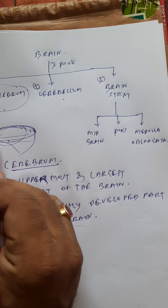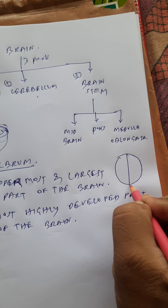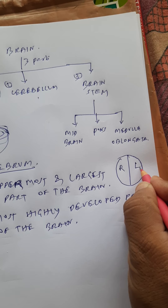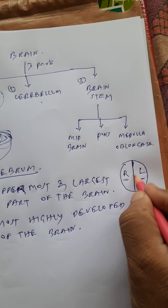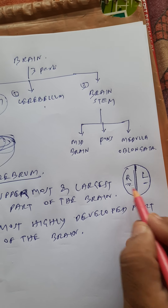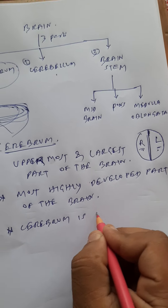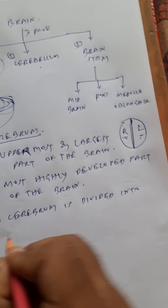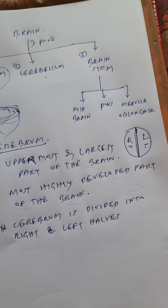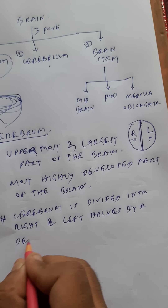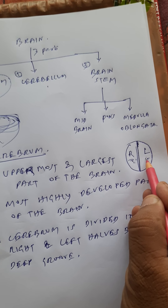The cerebrum is divided into two halves — one is the right half and another is the left half. Each half is called a cerebral hemisphere. So we have the right cerebral hemisphere and the left cerebral hemisphere.